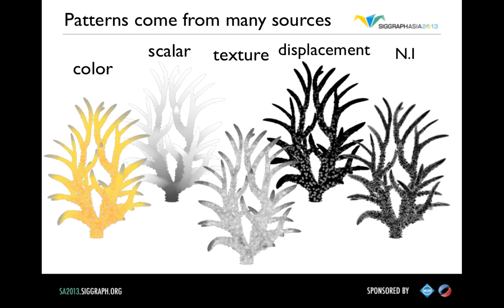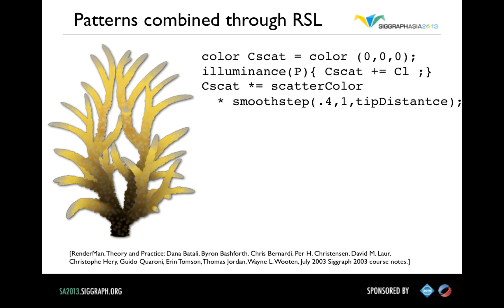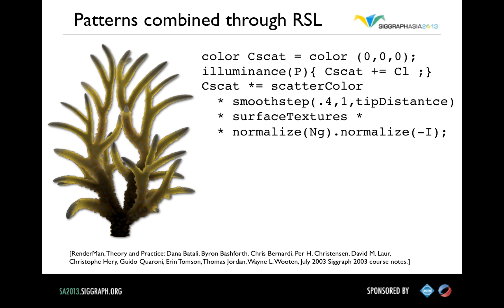It's actually not the least intuitive way to create shaders — in games, this is still pretty much the only way people write shaders. Patterns can come from many sources. For the coral from Finding Nemo, we had one pattern for color, a scalar pattern for length along the coral, another for bumpy texture, a displacement pattern, and the dot product of the normal and camera vector. In the shader, we'd start with a color pattern, multiply and scatter, then multiply in the tip distance pattern, apply a smooth step so values below 0.4 are black to darken the base of the coral, then multiply by texture details and finally by that fuzz effect — the dot product of the normal and eye vector.